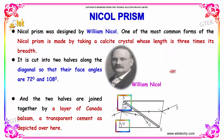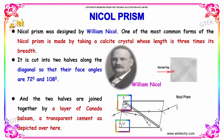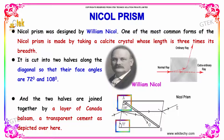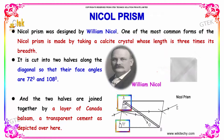Let's talk about the Nicol prism. The Nicol prism is designed by the great physicist and scientist Mr. William Nicol. One of the most common forms of the Nicol prism is made by taking a calcite crystal whose length is three times its breadth. It is cut into two halves along the diagonal so that their face angles are 72 degrees and 108 degrees.